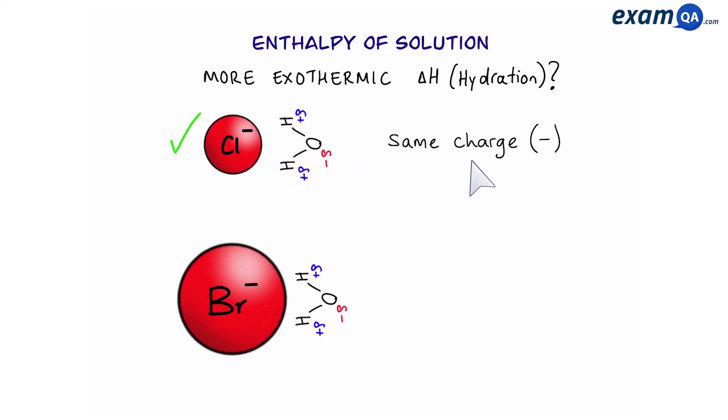So both of them have the same negative charge. However chloride ions are smaller and therefore they are more charge dense. Basically what that means is that the negative charge is compact in a much smaller area. So therefore chloride ions will have a stronger attraction with the delta positive on the hydrogen of water and therefore it will be able to form a stronger bond and release more energy.